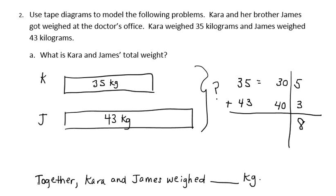And I'll add my tens, 30 and 40 is 70. Now I'll combine those two answers, 70 and 8 is 78. That means together, Kara and James weighed 78 kilograms.